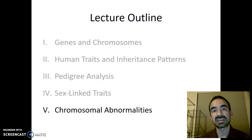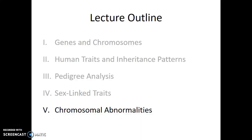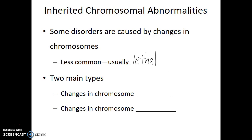In this video, we'll talk about genetic diseases and disorders that are caused by having an abnormal number of chromosomes or abnormal structure to those chromosomes. When there's an abnormal number of chromosomes or when the structure of chromosomes are atypical, they cause a variety of genetic disorders. These genetic disorders are less common and unfortunately usually lethal. There are two main categories when it comes to inherited chromosomal abnormalities: changes in chromosome structure or changes in chromosome number.